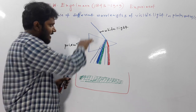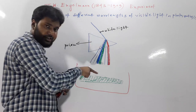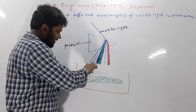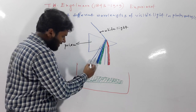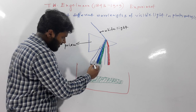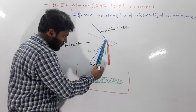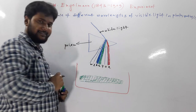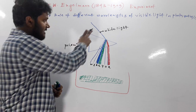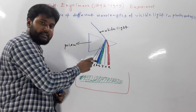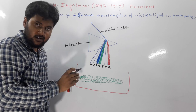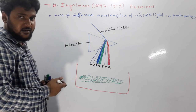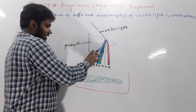The prism is specially designed, and if white light passes through it, it is simply split into its spectral components. So these are the spectral components: violet, indigo, blue, green, yellow, orange, and red. Engelmann split white light using a prism into its spectral components, so these different types of colored lights were produced.